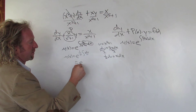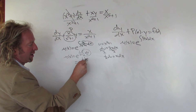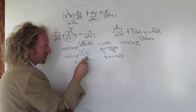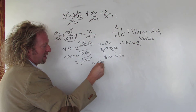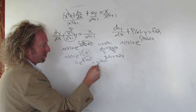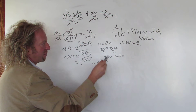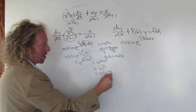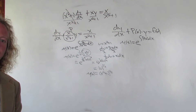So μ(x) = e to the integral, pulling out the 1/2, of du/u. That gives e to the (1/2)·ln|u|. We bring this upstairs using the exponent rule, which gives |u|^(1/2). Since u = x²+1, which is always positive, we drop the absolute value. So μ(x) = (x²+1)^(1/2). That's the integrating factor.